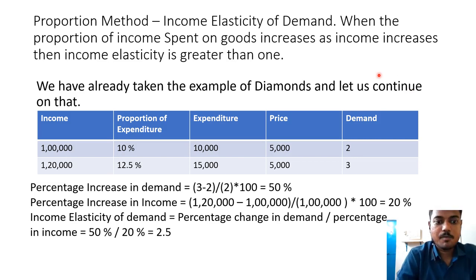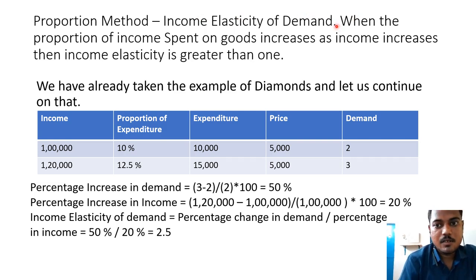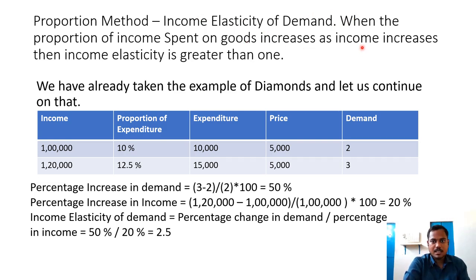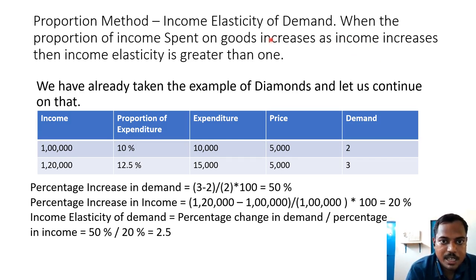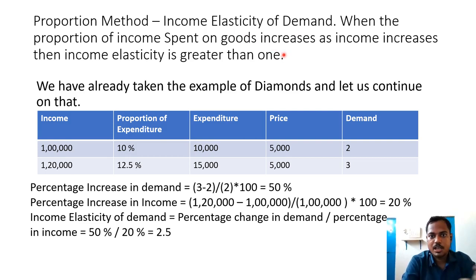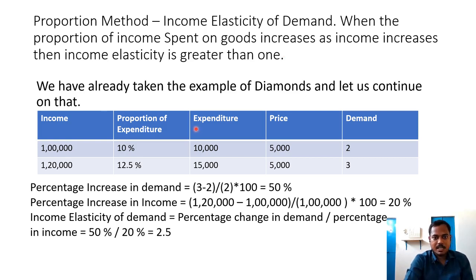There is also a proportion method for calculating income elasticity of demand. The observation here is: when the proportion of income spent on goods increases as income increases — when the consumer has more and more income, he is spending a greater percentage of his income on the goods. For example, initially he is spending 10% of his income on the goods, and when his income increases, this rises to 12.5%.